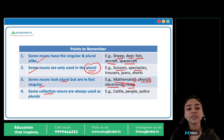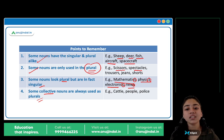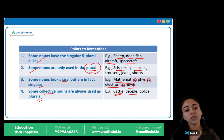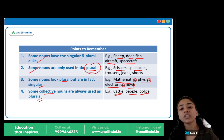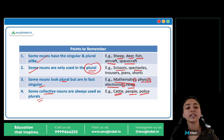And last point — some collective nouns are always used as plurals. Kuch collective nouns hote hain jo a group or a collection represent karte hain — jaise cattle. A group of cattle, a herd of cattle. People represents all the people, toh plural hi hai. Police — the police arrived — matlab a group of policemen, toh woh bhi plural hi hai.